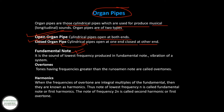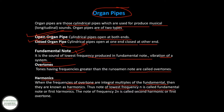Fundamental note is the sound of lowest frequency produced in the vibration of a system. Overtones are tones having frequencies greater than the fundamental note. When the frequencies of overtones are integral multiples of the fundamental, they are called harmonics. The note of lowest frequency n is called the fundamental note or first harmonic. The note of frequency 2n is called the second harmonic or the first overtone.